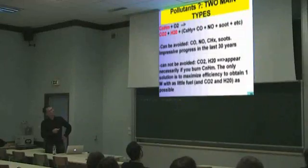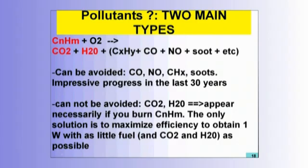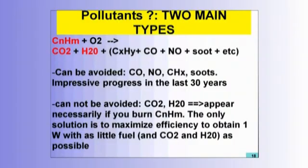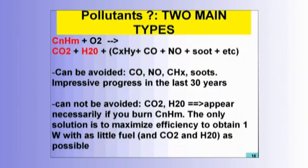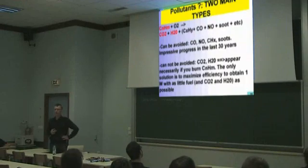The progress in reducing these pollutants has been impressive in the last 30 years. Ten years ago the objective was to diminish those things, but now the objective is different — we also want to diminish CO2 and H2O. If you burn a hydrocarbon, one molecule will necessarily give you N molecules of CO2, you cannot avoid that. So the only way to decrease CO2 and water emissions is to maximize efficiency — we need to build engines which consume as little hydrocarbon as possible. The progress in the combustion field has been huge in the last 20 years; in piston engines for example, efficiency has increased by a factor of two.